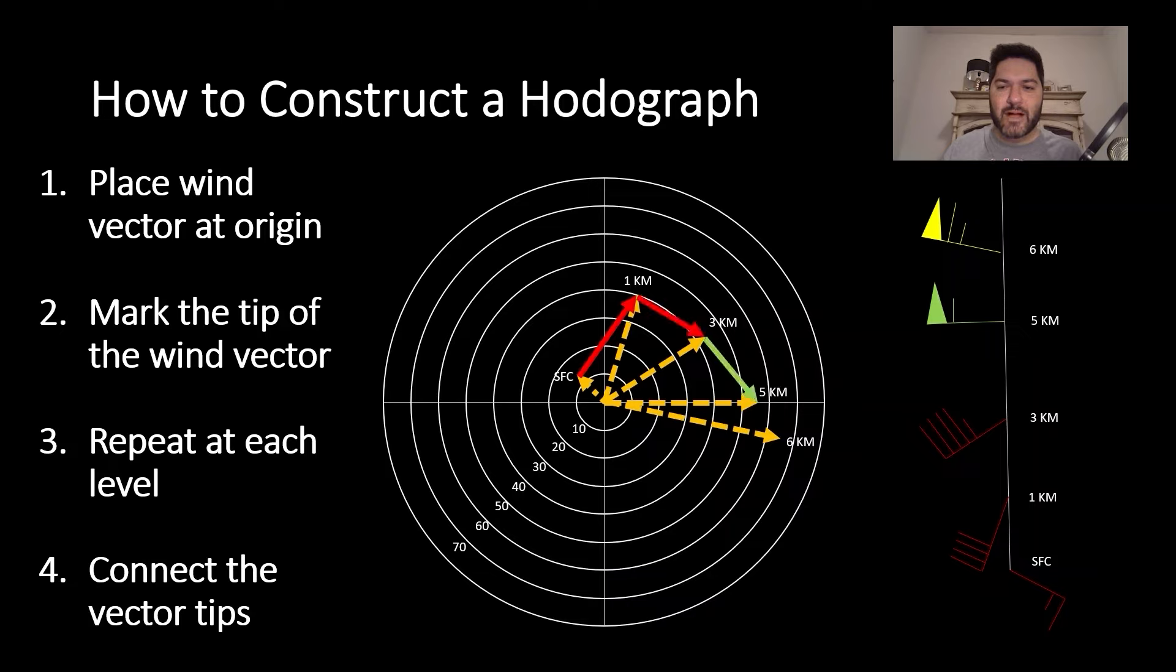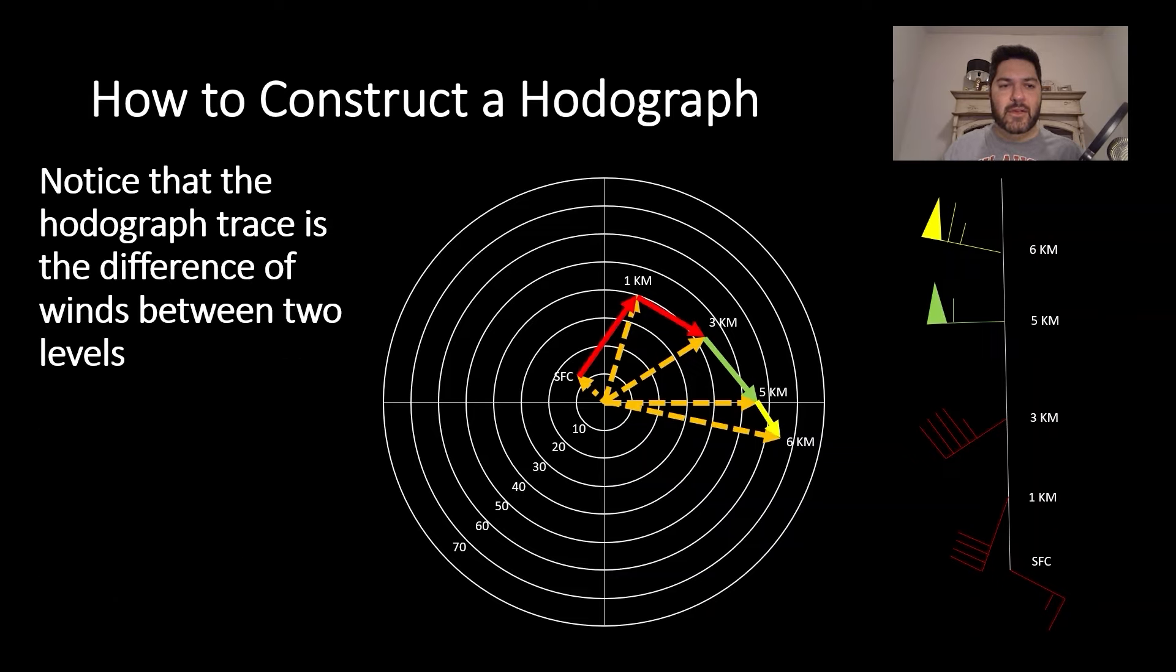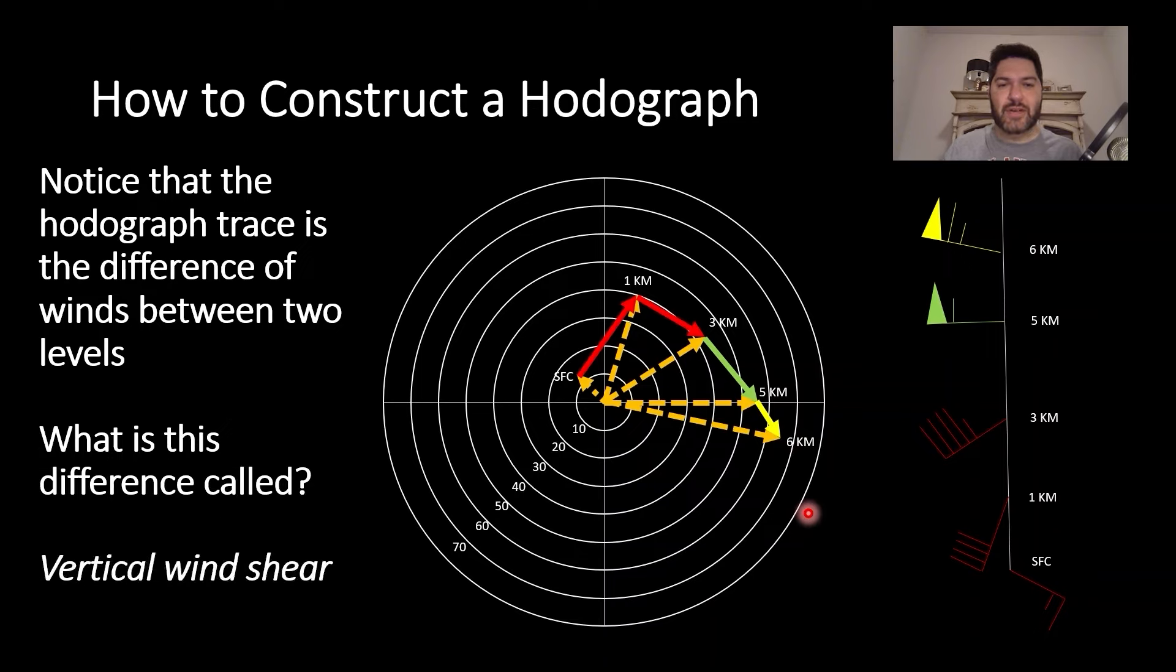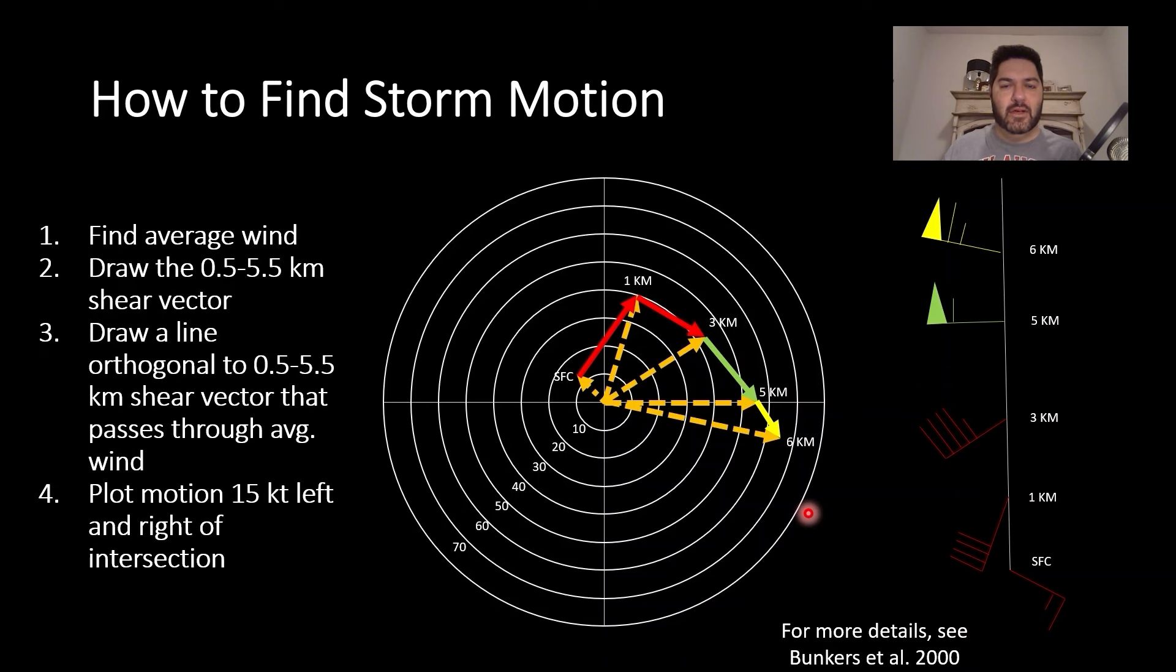Notice that the hodograph trace, which is right along here, is a difference of wind between two levels. You know what this difference is called? That's right - it's vertical wind shear. Basically, the hodograph is a visual representation of vertical wind shear.